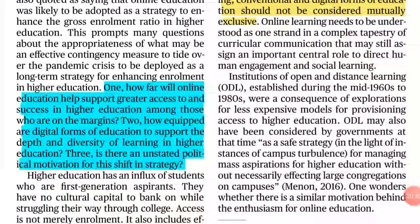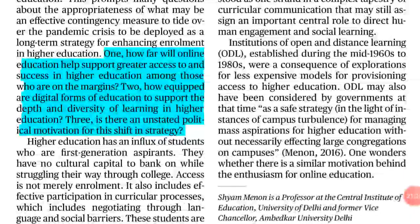But there are important questions about the efficacy of online education. How far will online education support greater access and success in higher education among those in the margins? People in marginal sections may lack digital connectivity, or have slow internet in remote areas. E-education is a privilege of well-off students in society. Second, how equipped are digital forms of education to support the depth and diversity in learning in higher education? Third, is there any unstated political motive for this shift in strategy?